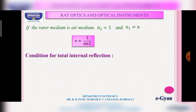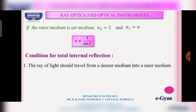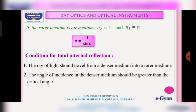Now let us see the two conditions for total internal reflection. First, the ray of light must travel from a denser medium to a rarer medium. Second, the angle of incidence in the denser medium must be greater than the critical angle. Both conditions must be satisfied for total internal reflection to occur.